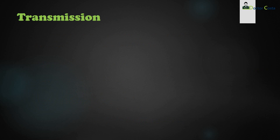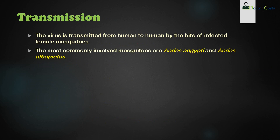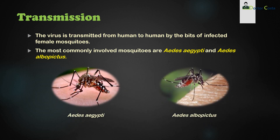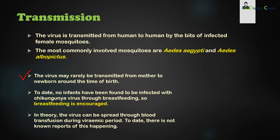The virus is transmitted from human to human by the bites of infected female mosquitoes. The most commonly involved mosquitoes are Aedes aegypti and Aedes albopictus. You can see the pictures of both species. These mosquitoes also transmit dengue virus. Aedes aegypti is more common in tropical areas, whereas Aedes albopictus is found in tropical areas and also in temperate zones.